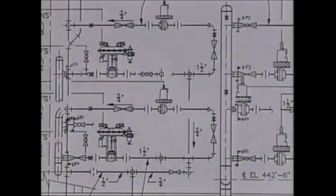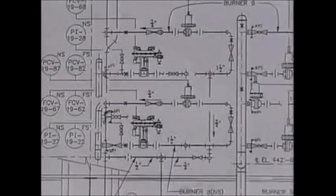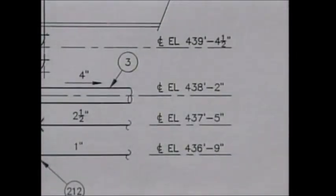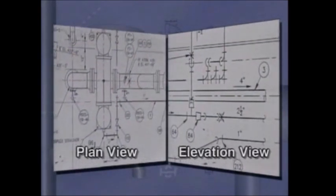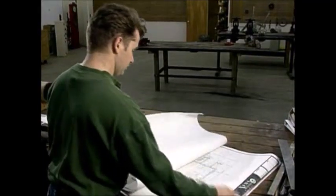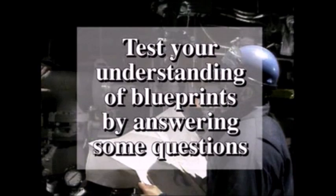An elevation view is what we see if we stand at one wall and look across a room or building. It shows the piping and equipment that can be seen from a specific floor elevation. The actual configuration of a piping system can be seen more clearly in this view, which shows vertical and horizontal piping runs with distances from the floor elevation indicated. To check your understanding of blueprint reading, answer these questions.